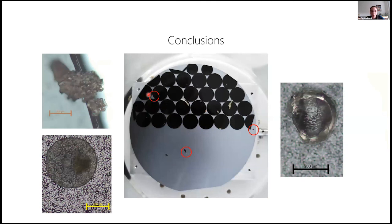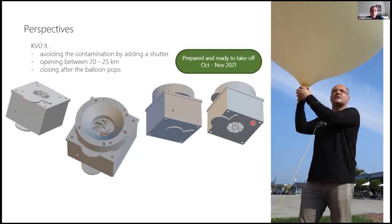So in conclusion, we saw three samples that could be micrometeorites, so the perspective of this module is quite good. In the next step, we added a shutter on the module to open in 20 to 25 kilometers height, because we know the contaminants, most of the contaminants stay in the 18 kilometer height, and it should close after the balloon pops.